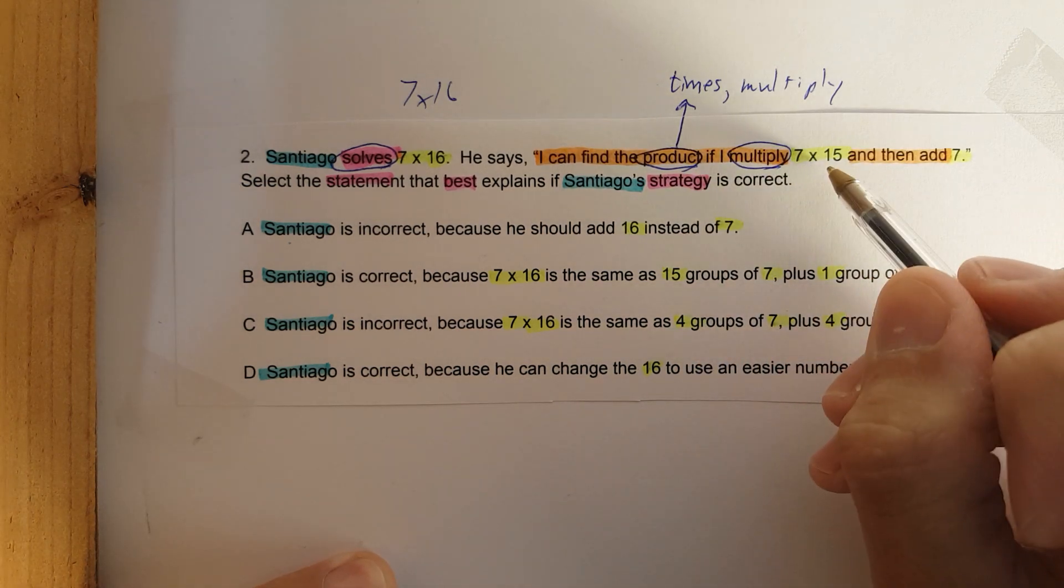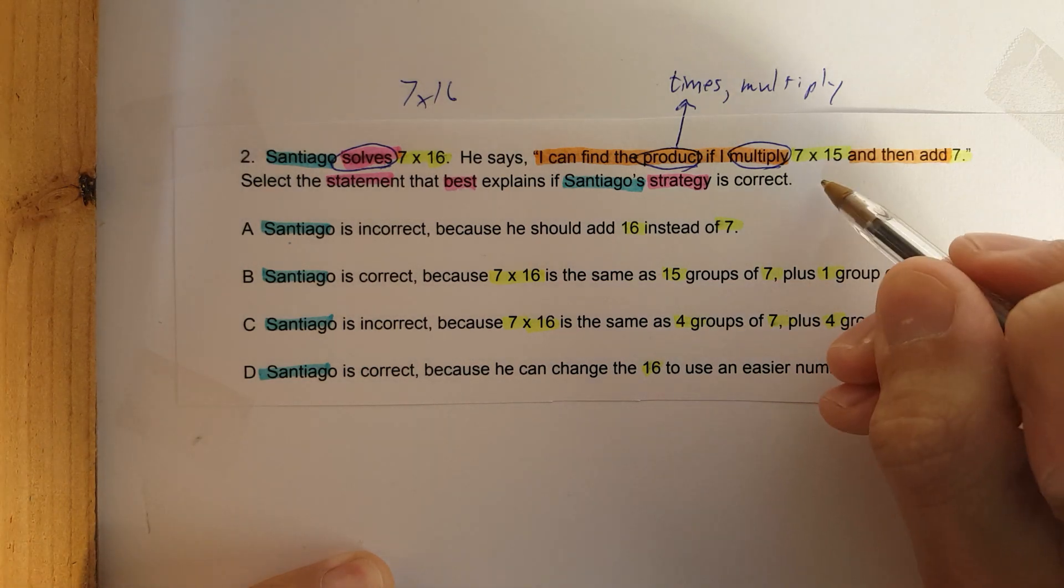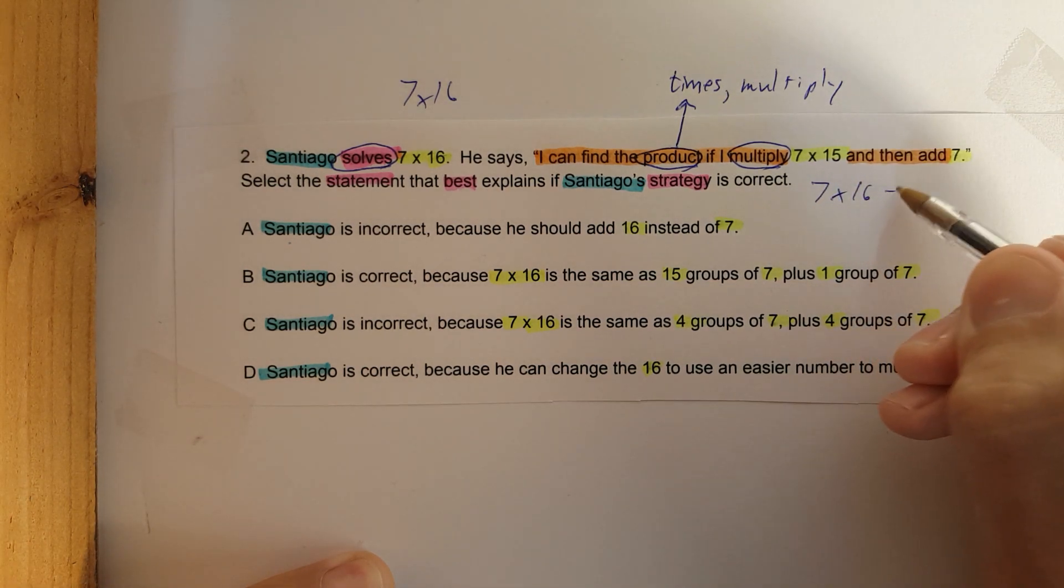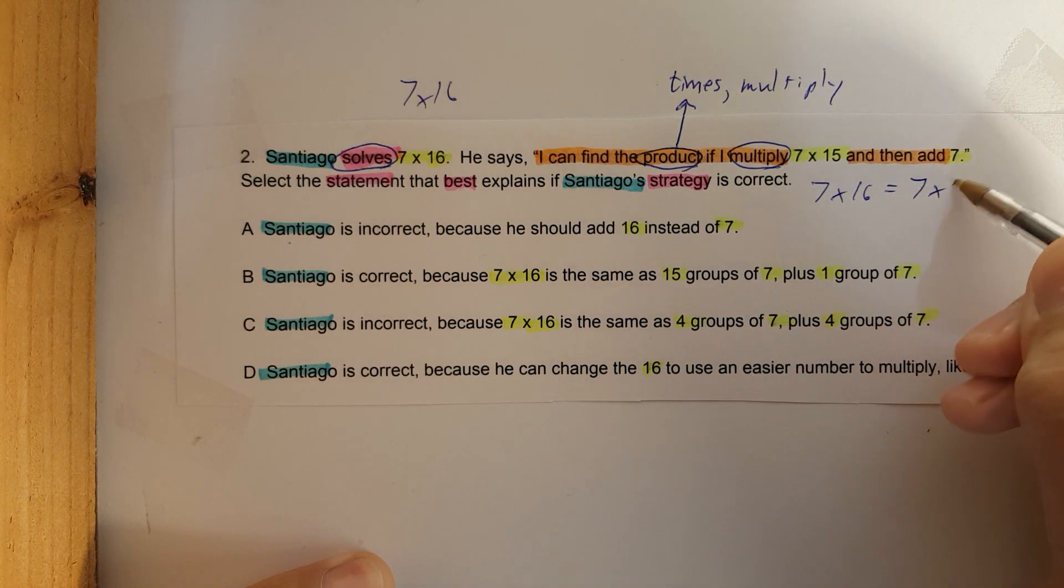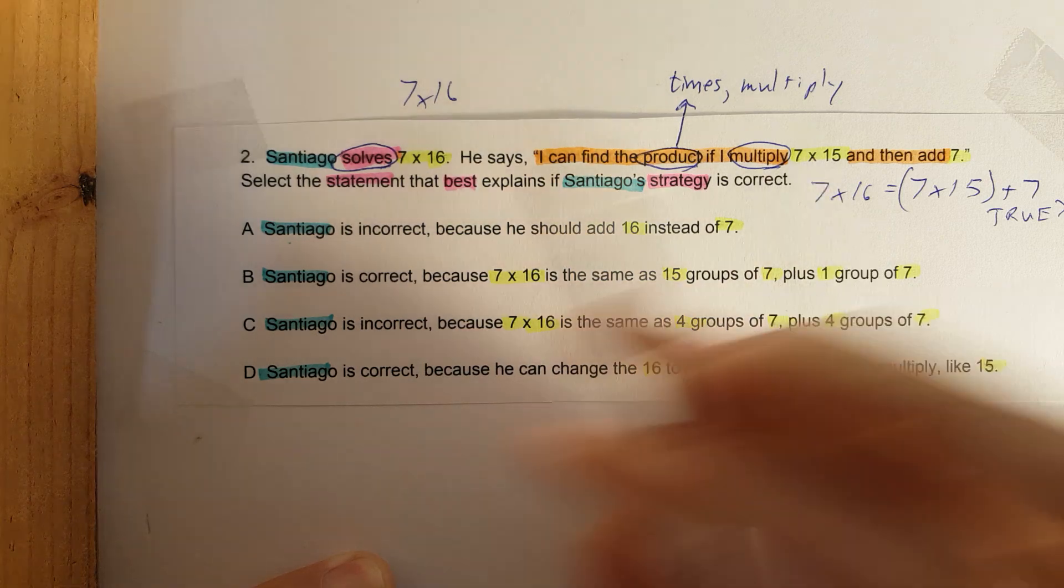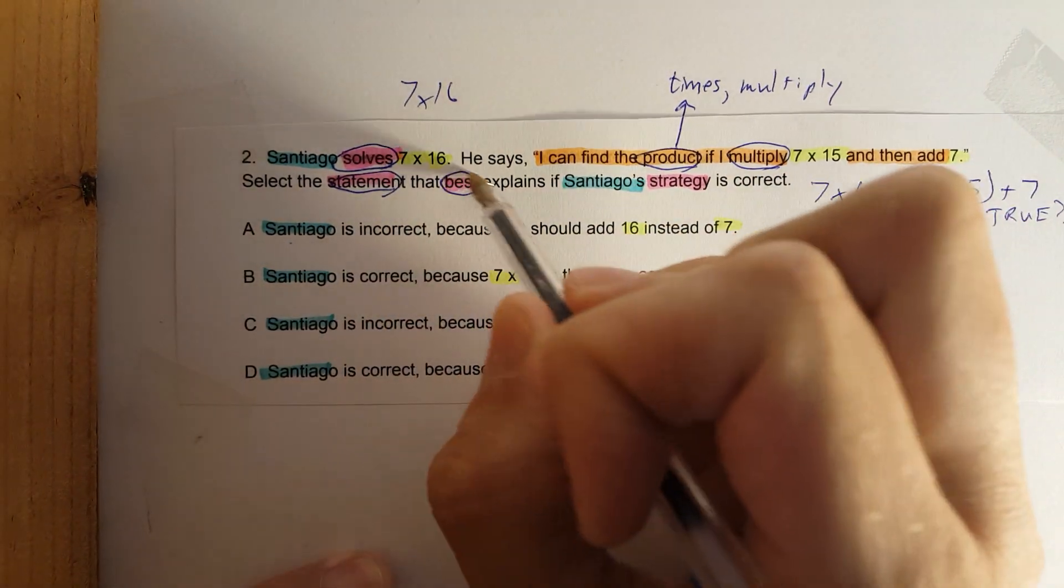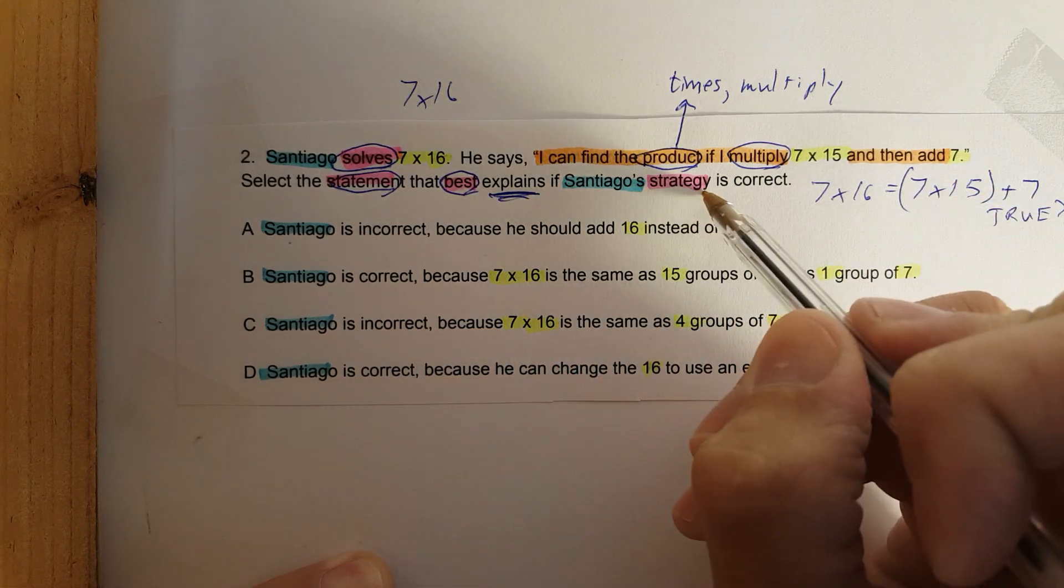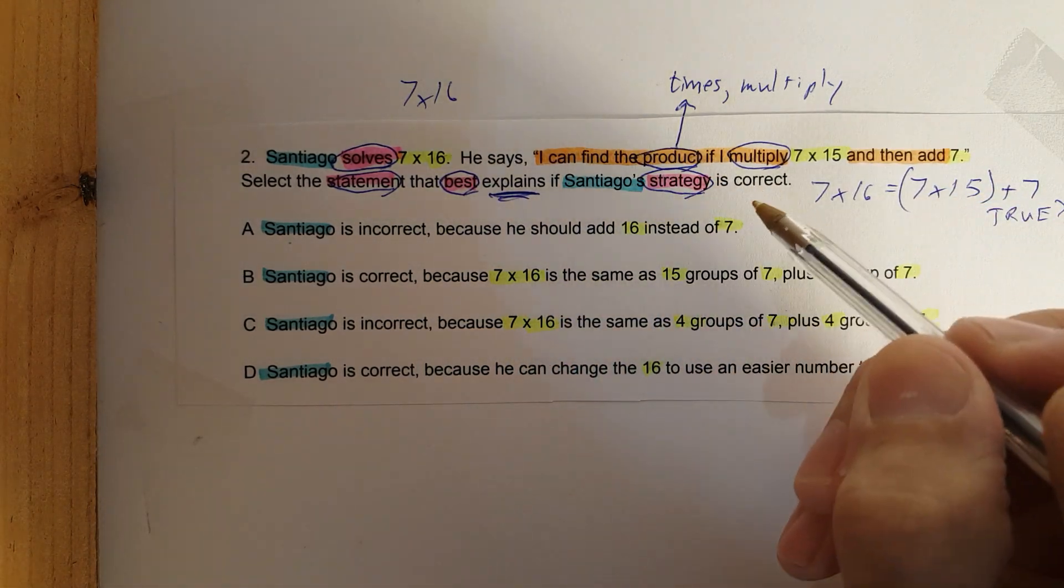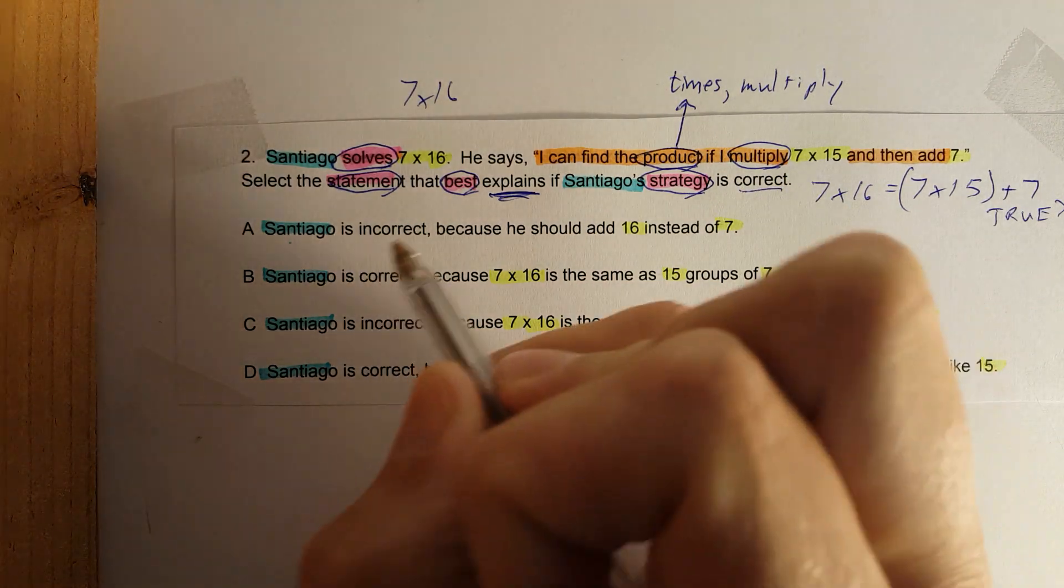If I multiply 7 times 15 and then add 7, so he's saying 7 times 16 is equal to 7 times 15 plus 7. Is this true? And that's what we need to figure out. So select the statement that best explains if Santiago's strategy is correct.